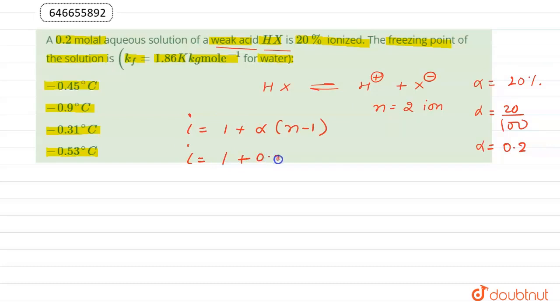So i can be calculated as 1 plus 0.2 times (2 minus 1), because we are getting 2 ions in aqueous solution. So we get i is equal to 1.2.